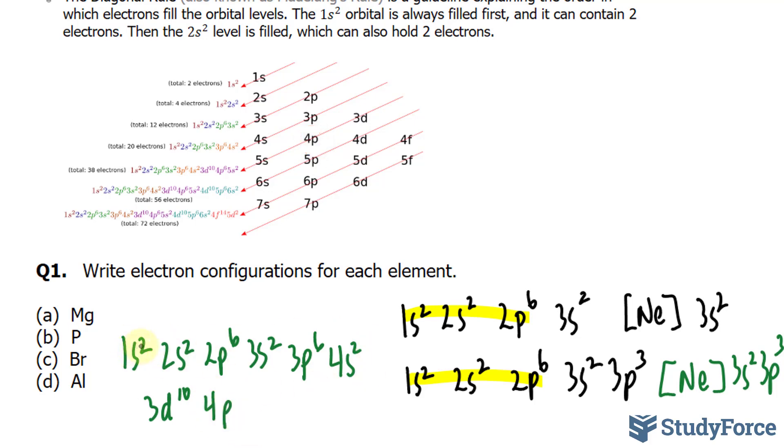So let's count how many we have so far, 2 plus 2 plus 6, that's 10, 16, 18, 20, 30. We need 5 more, and we know this holds up to 6, so we'll write down 5.